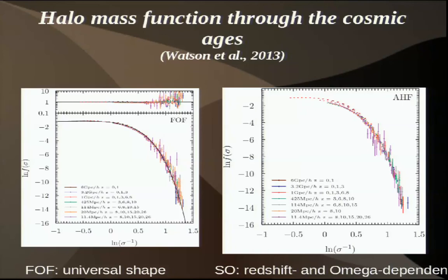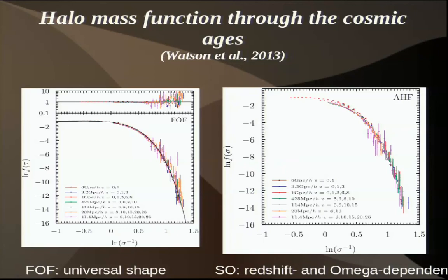One of the results from these simulations — much of this is the PhD thesis of a student who just finished — is the halo mass function, calculated from a large number of simulations going from redshifts 0 to 26 and box sizes from very small to extremely large. We found that the halo mass function using the friends-of-friends algorithm is fairly universal and can be fit for many purposes. For spherical over-density finding, it's not universal — you can see dark energy effects at late times — but you can still fit it at both high and low redshift.